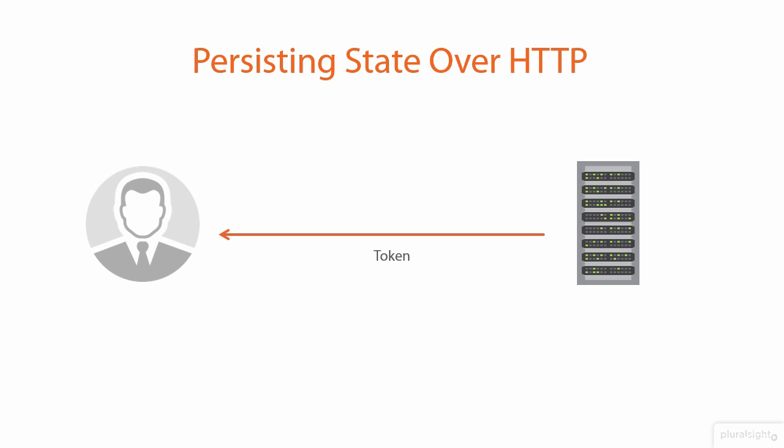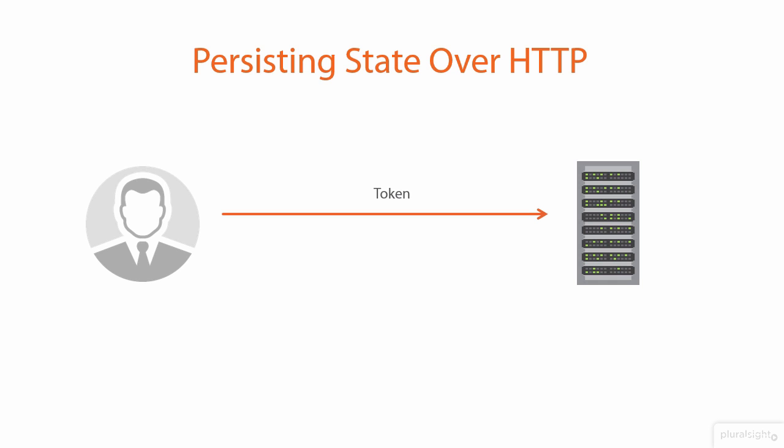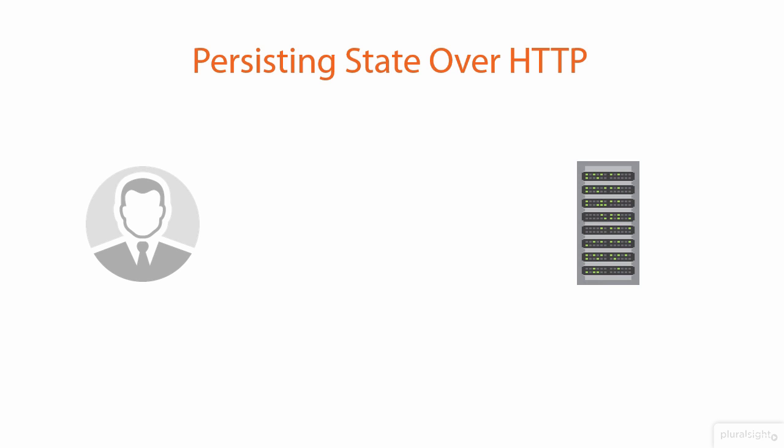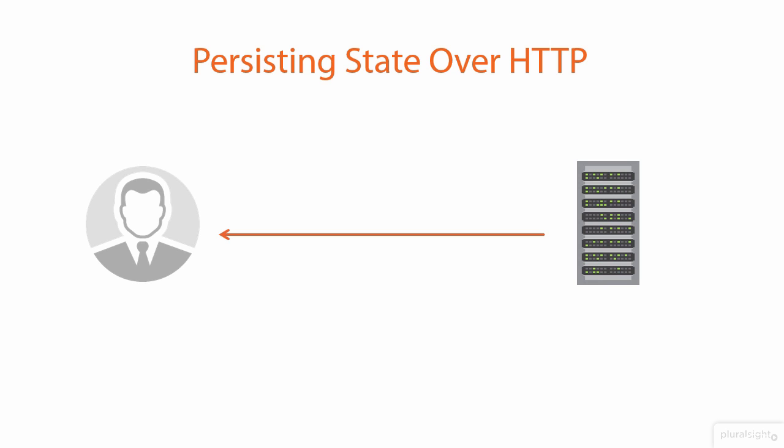Persistence is then done by ensuring that when the user makes a subsequent request, the token is sent with it. The server can look at the token and say, I know who you are - you're the person who just logged in - and it can then send a response appropriate to that user. The user makes another request, the token goes again, and the server sends back an authenticated response.